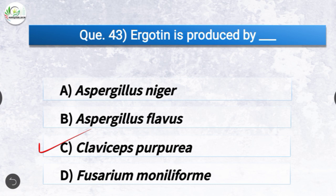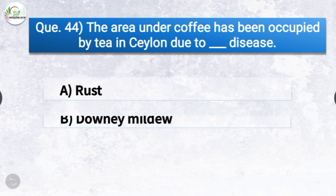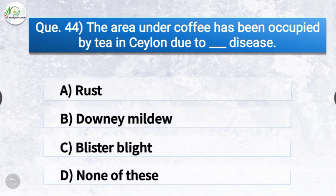Question number forty-four: The area under coffee has been occupied by tea in Ceylon due to dash disease. The options are rust, downy mildew, blister blight, or none of these. The correct answer is option A, rust. The area under coffee was occupied by tea in Ceylon due to rust disease.